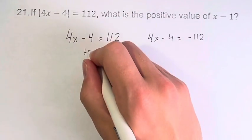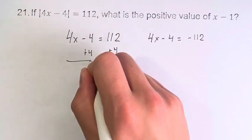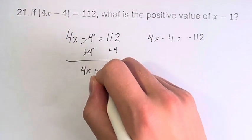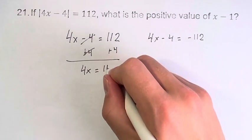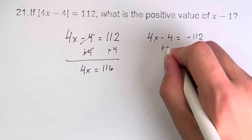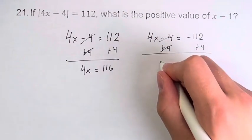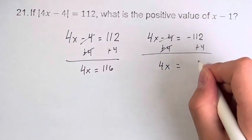Now we can just solve for x. Adding 4 to both sides, 4x is equal to 112 plus 4, which is 116. Adding 4 to both sides here, these cancel, and we're left with 4x is equal to negative 108.